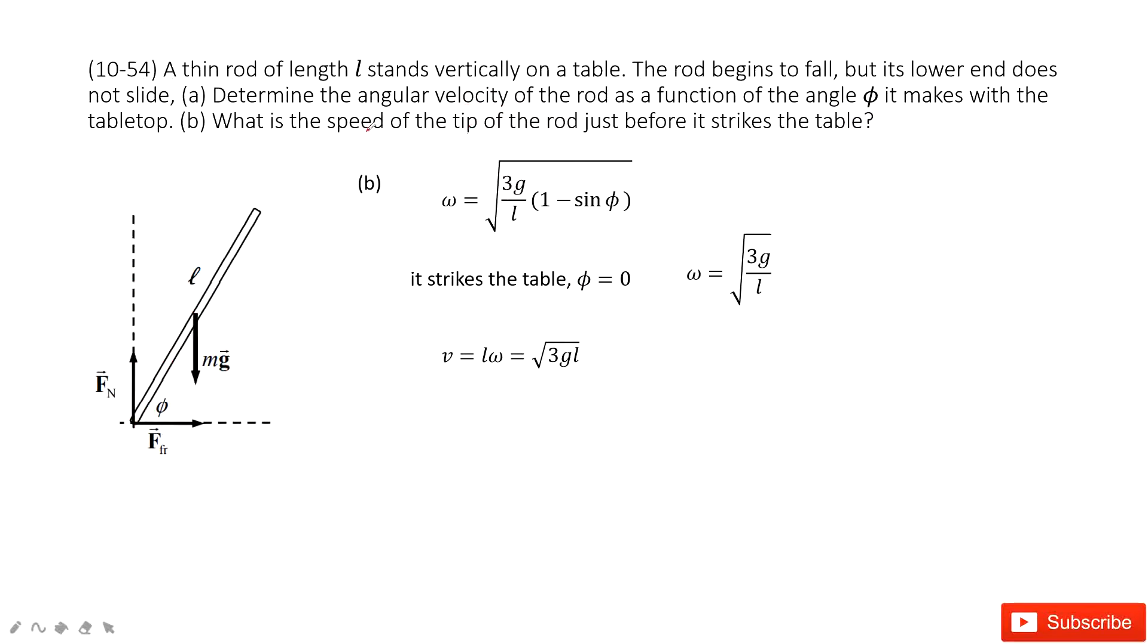The next one asks us to find the speed of the tip of the rod. So the velocity v when it is just before it hits the table. So that means if we want to find the v, linear velocity, it is L times omega.